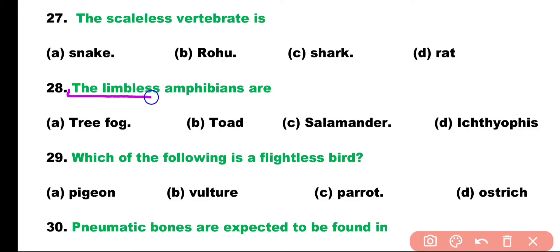Question number 28. The limbless amphibians are: tree frog, toad, salamander, or ichthyophis? Correct answer is Option D. Ichthyophis is a blind amphibian and also limbless amphibian belonging to the order Gymnophiona.